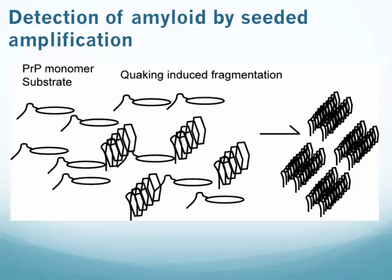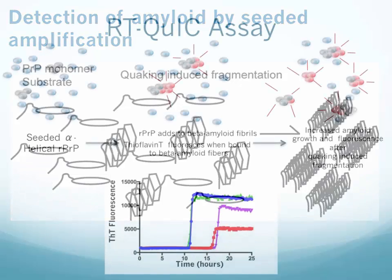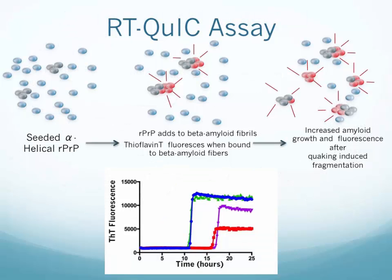After fragmentation, more monomer adds on to the ends of each one of those amyloid filaments, until there's enough amyloid present that the thioflavin T dye can recognize it. In the RT-QUIC assay, the reaction buffer contains the alpha-helical recombinant PRP. Typically in our lab we use the Syrian hamster recombinant PRP, residues 90 to 231 — the truncated form of the Syrian hamster protein. We've found that to be really versatile for a number of different seed substrates and a number of different species of animals.